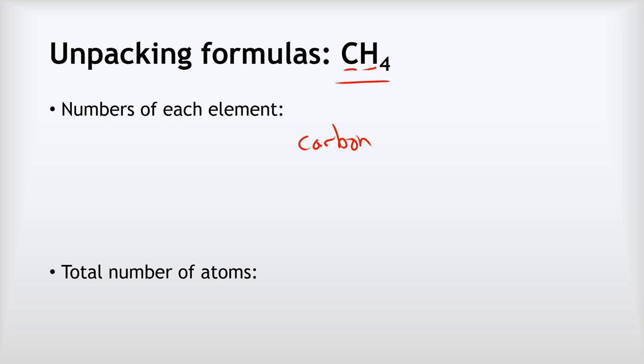So now we're going to work through some examples of interpreting formulas, starting with methane, which has this formula CH4. Each time, we're going to look at the numbers of atoms of each element that are present, and then the total number of atoms as well. Methane has two different elements in it. Carbon, which is C, and hydrogen, which is H. There is no number next to the C, so we have one carbon atom. However, there is this subscript 4 next to the hydrogen, so that means we've got four of them, but only four hydrogens. The 4 does not apply to the carbons. So that tells us we've got one carbon atom and four hydrogens, and the total number of atoms, we just add them both up. 1 and 4 gives us 5 total atoms.